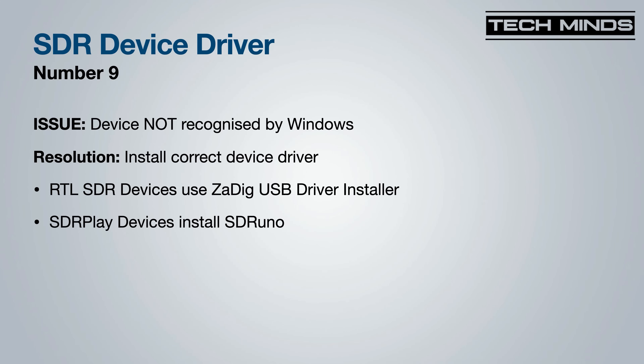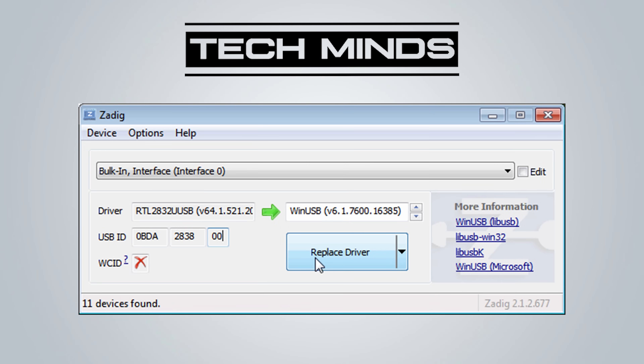At number nine we touch on a popular topic where newcomers to the SDR hobby struggle to get their SDR device working with the SDR software. Apart from faulty or cheap clone issues, device drivers will be near the top. However, some devices do not need device drivers — like Airspy products, which are just plug and play with Windows. RTL-SDR dongles and SDRplay devices do need device drivers loaded. SDRplay device drivers are installed as part of SDR Uno, and you can download the API separately if required. The most common way to install drivers for RTL-SDR devices is to use an application called Zadig (Z-A-D-I-G). I'll link in the description below if you're not sure where to find it.